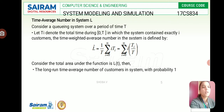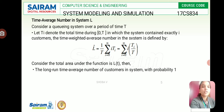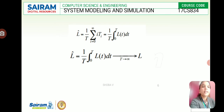Consider a queuing system over a period of time. Let T_i denote the total time during which the system contains exactly i customers. The time-weighted average number in the system is defined as (1/T) × summation from i=0 to infinity of i·T_i. Considering the total area under the function L(t), the long-run time average number of customers in the system — with probability one — is given by the integral L = (1/T) × integral from 0 to T of L(t) dt.